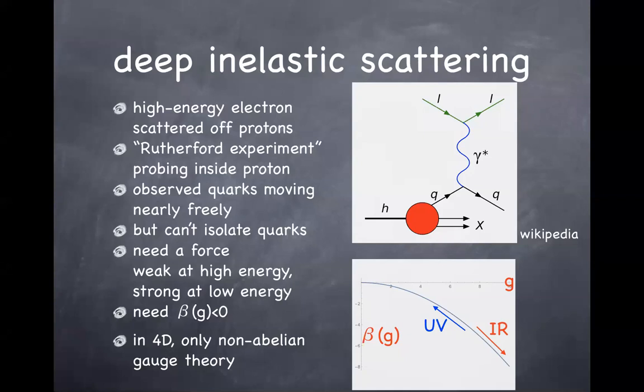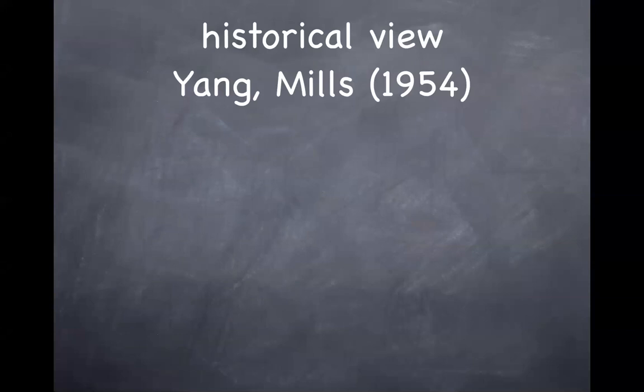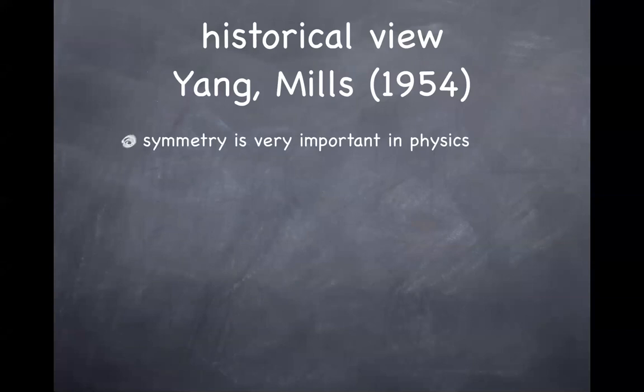That's one historical reason why we want to talk about non-Abelian gauge theories. But there is yet another reason, which is much more theoretical. That was discussed earlier by Yang and Mills — that's why non-Abelian gauge theory is also sometimes called Yang-Mills theory.